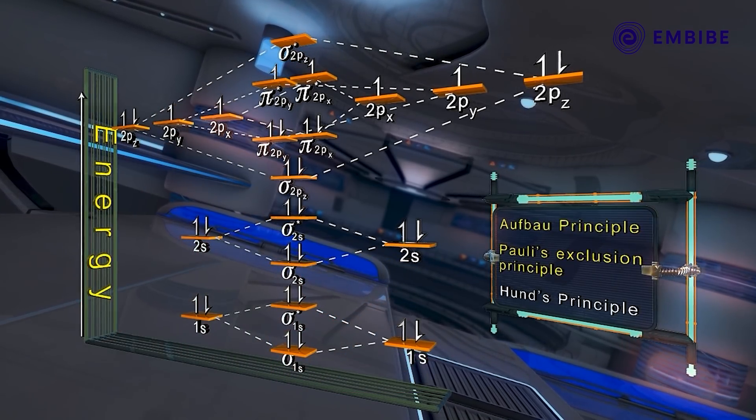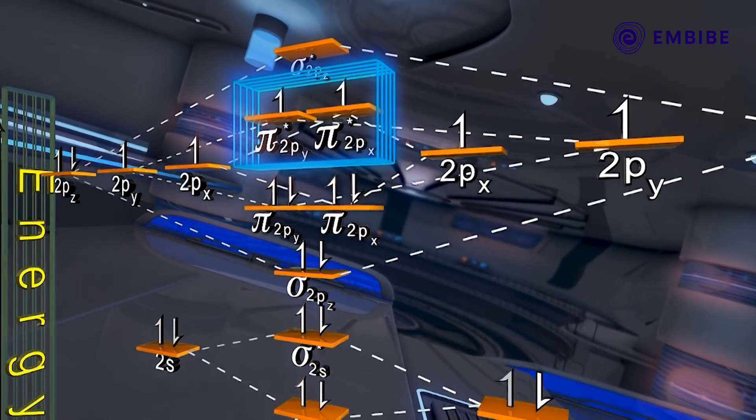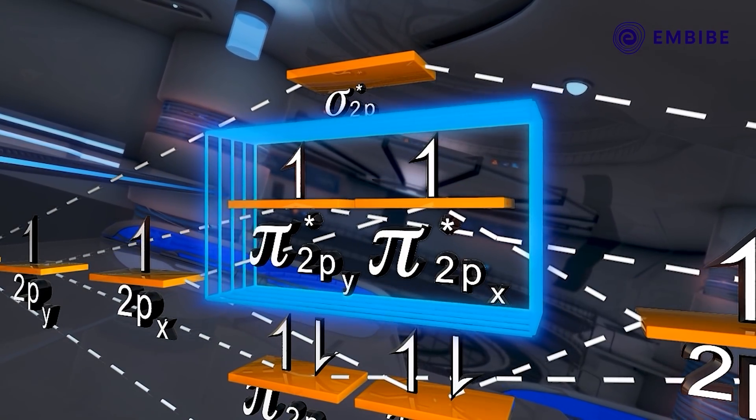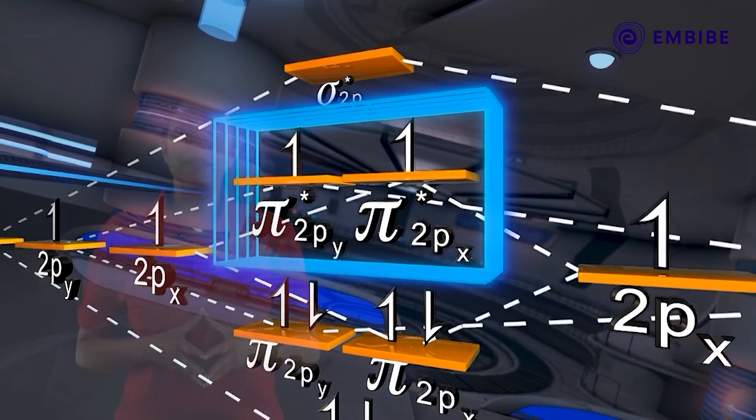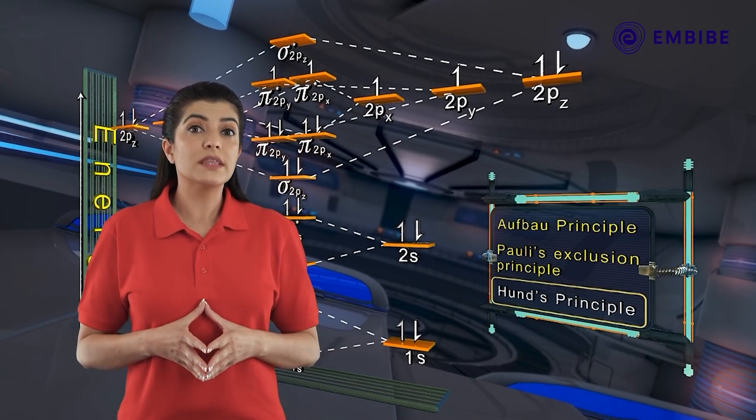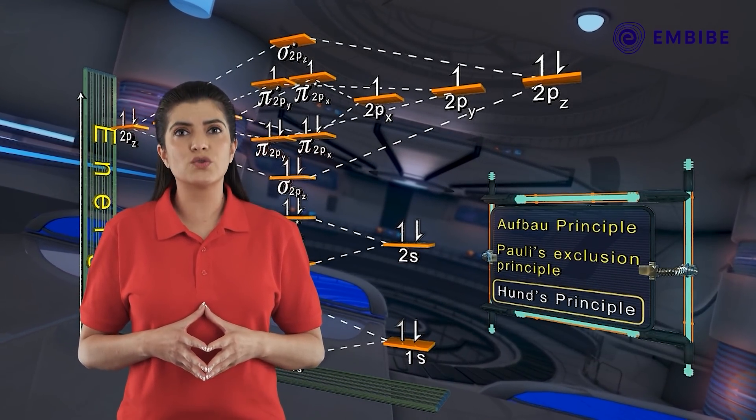Note that before getting paired up, the electrons occupy the π*2py and π*2px molecular orbitals singly. This is in accordance with the third rule, which is Hund's rule.